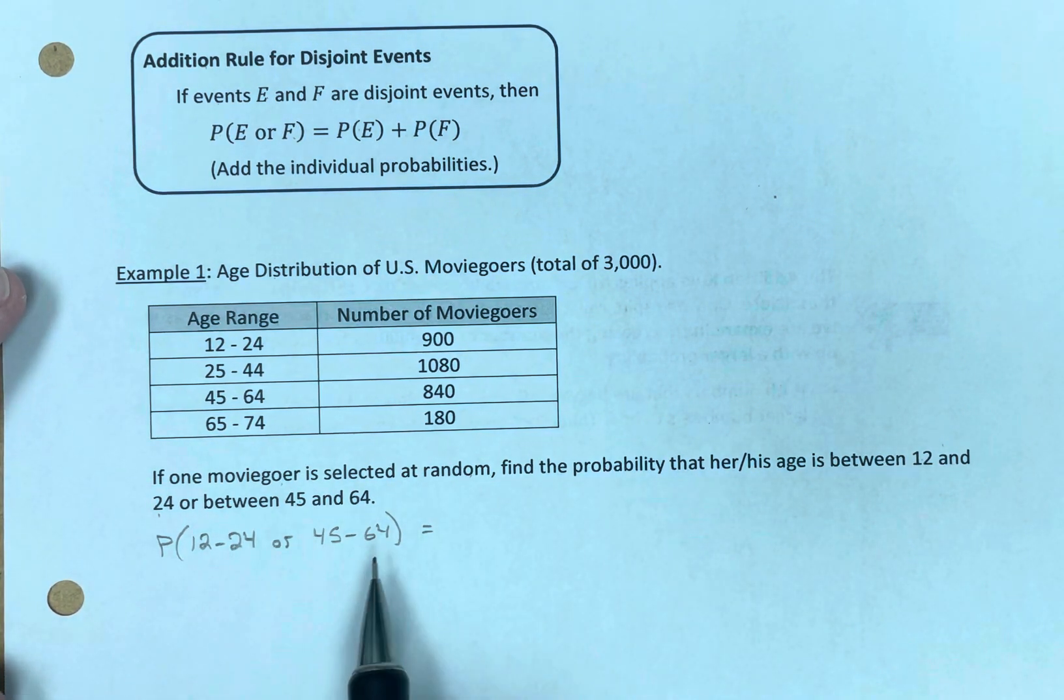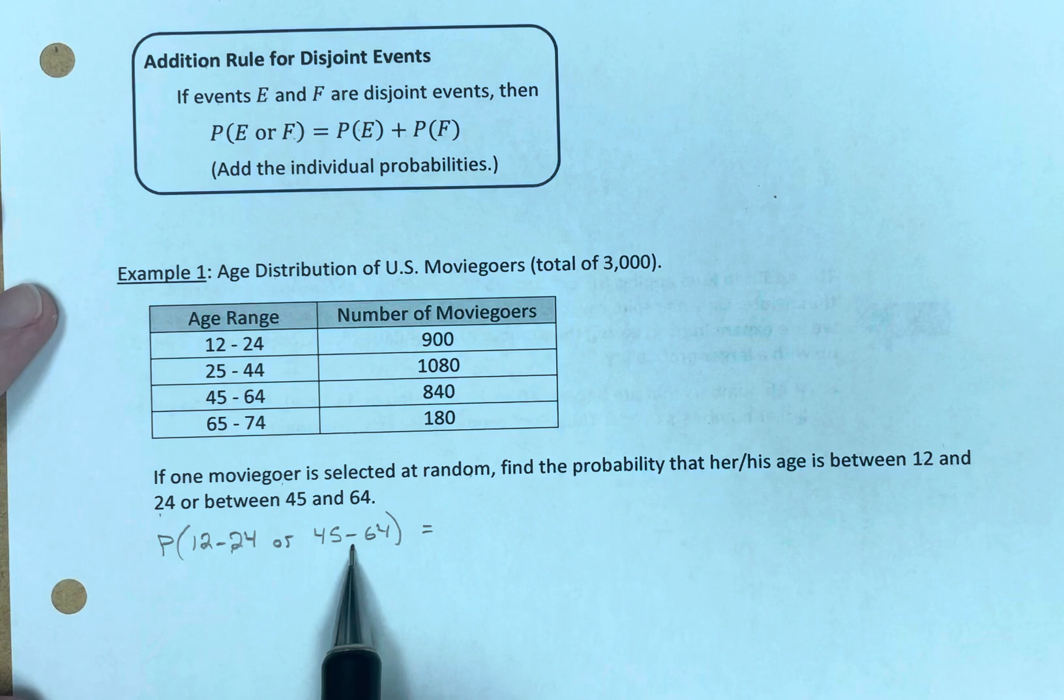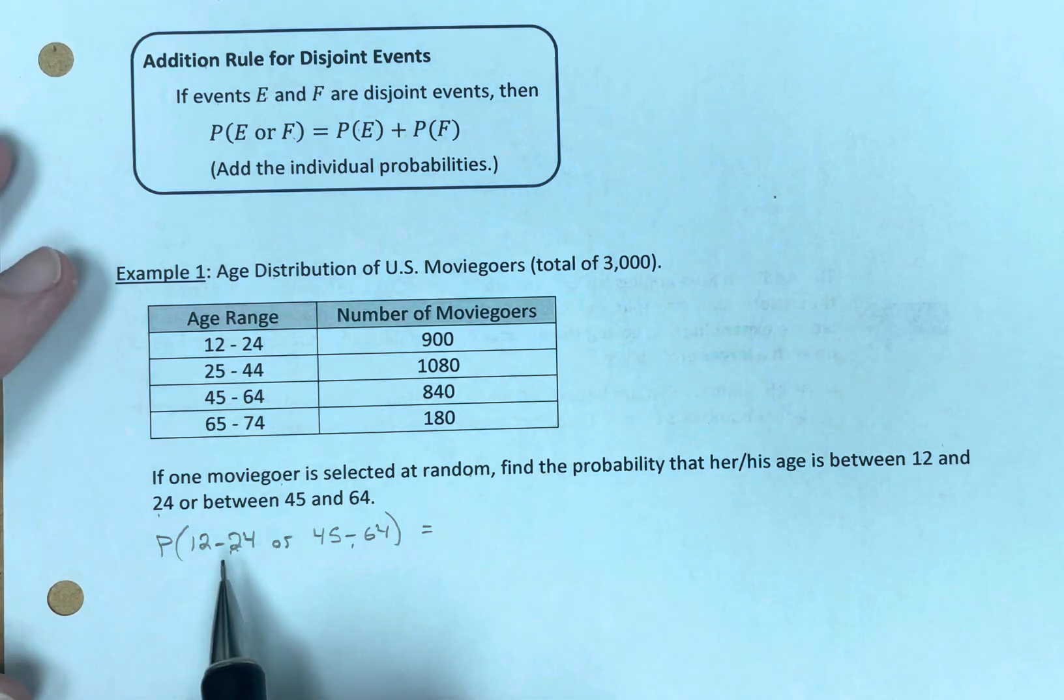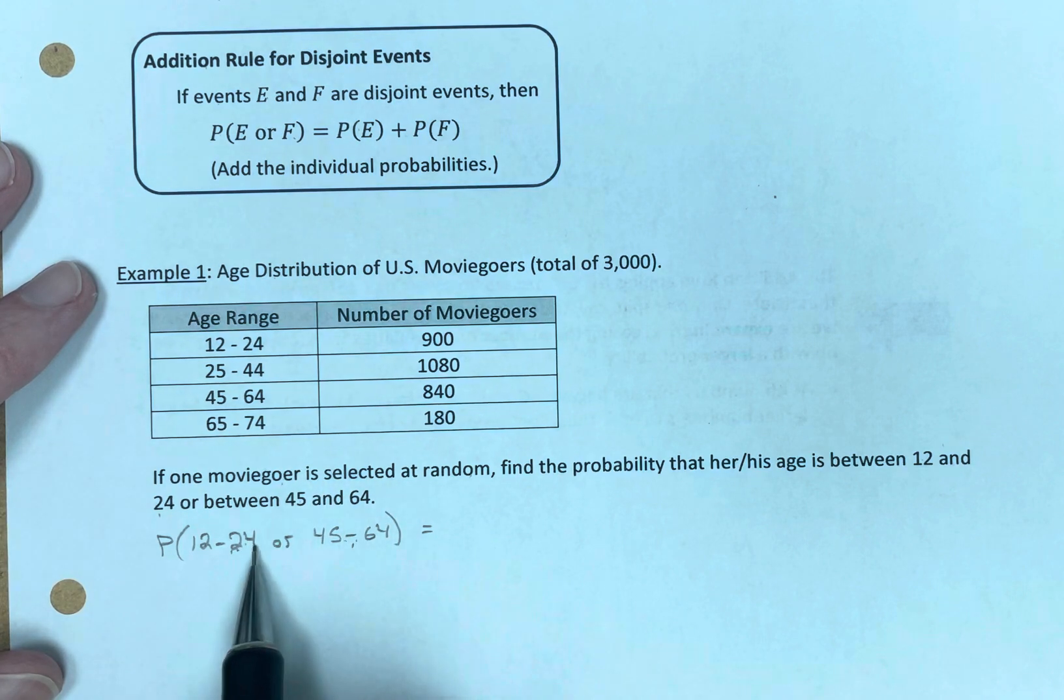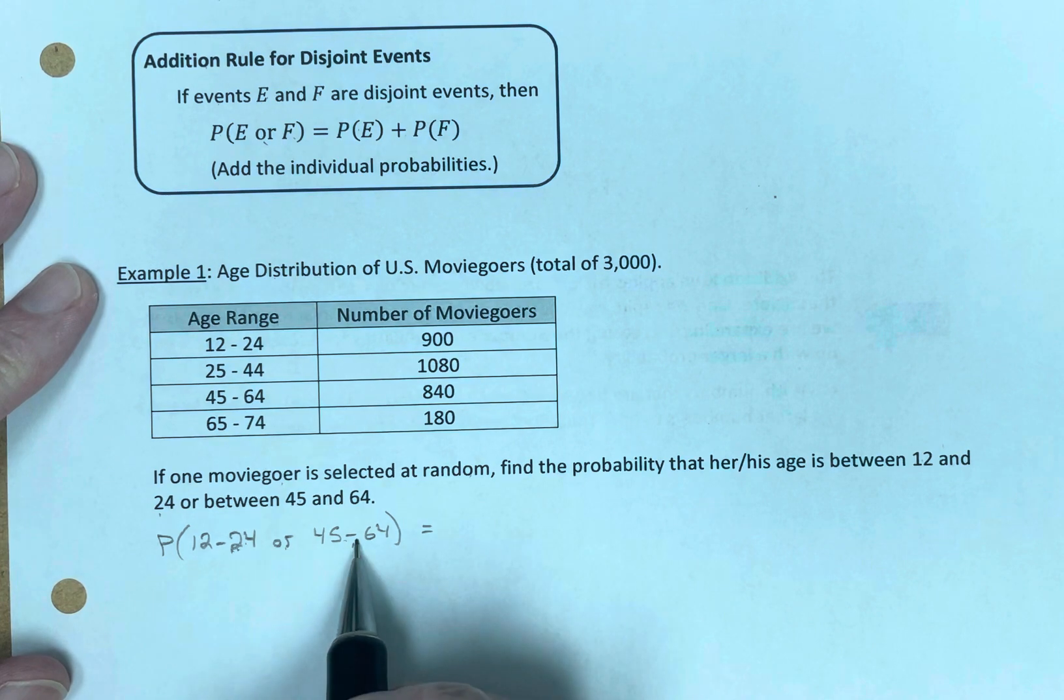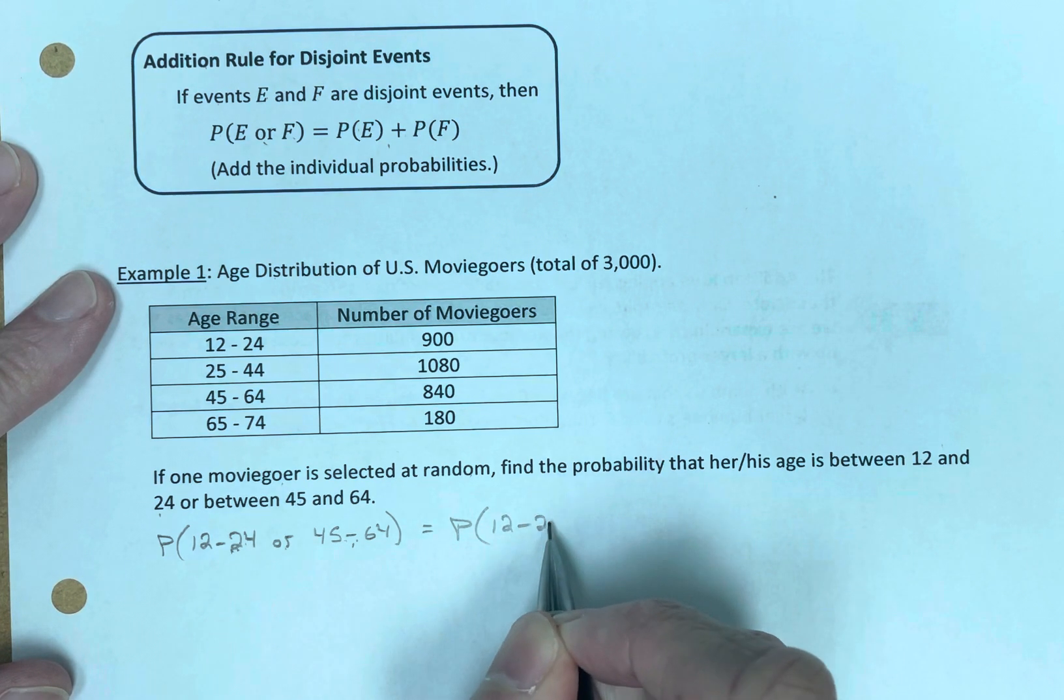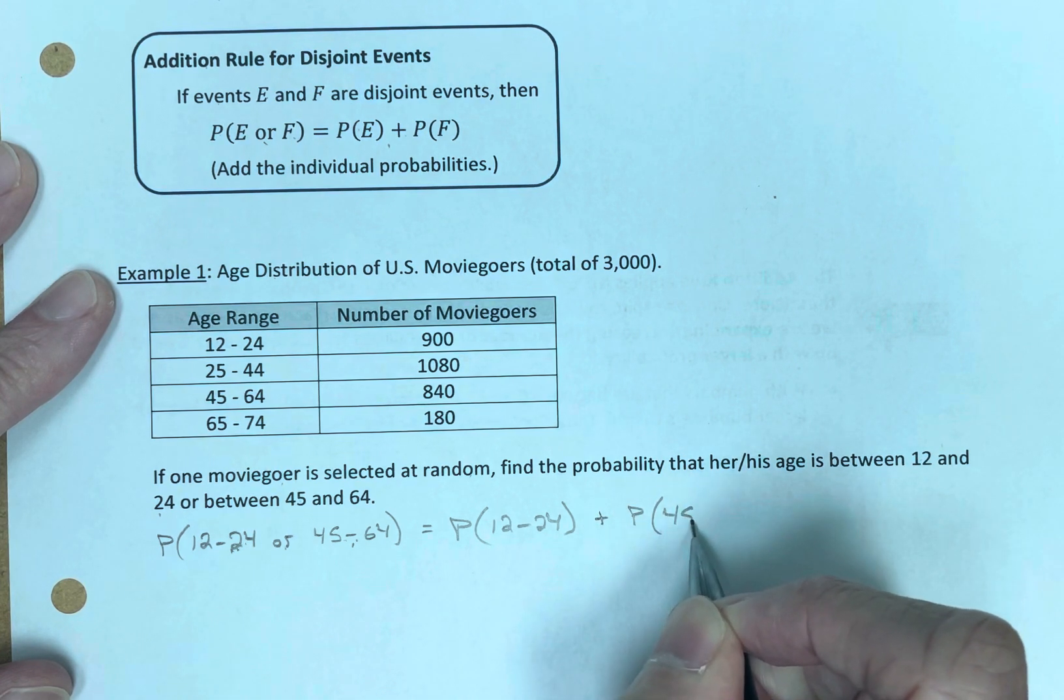So the probability that you're between 12 and 24 or 45 to 64—these are disjoint. There's nobody who's in this age range and in this age range. There are no outcomes in common. Hey, I'm 15 and I'm 60—no, you're not. You're one or the other. You're either in this category or you can be in this category or you're not in the categories. But either way, you will not be in both categories at the same time. So the probability of the first event, you're between 12 and 24 or you're between 45 and 64, equals the probability that you're between 12 and 24 plus the probability that you're between 45 and 64.